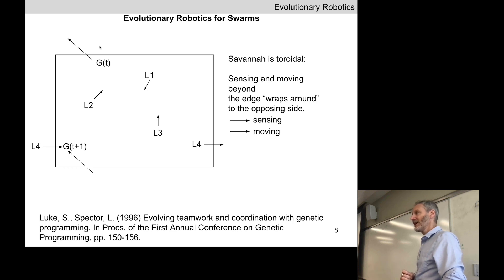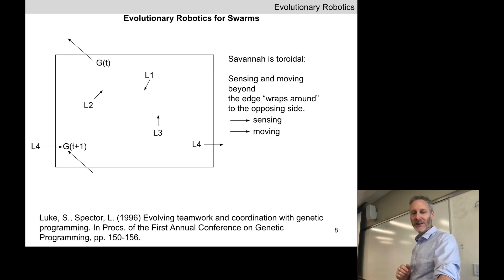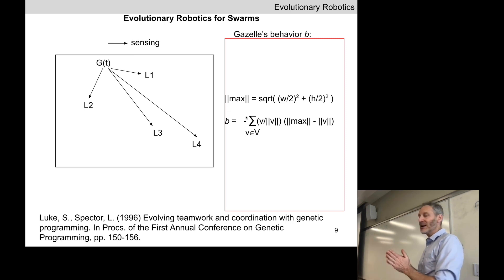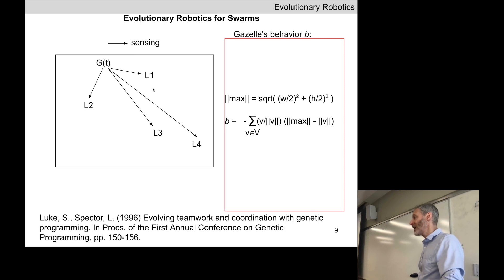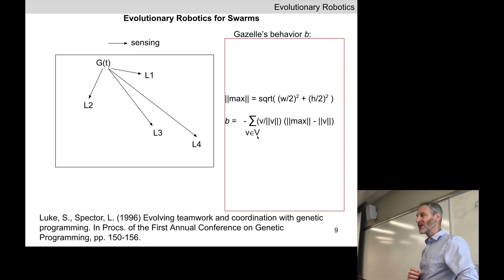We're stacking the deck against the lions — they can't corner the gazelle, and they're slower. We pre-program the gazelle's behavior using vector operations. At every time step, we want back five 2D vectors — one for the gazelle and four for the lions — indicating where each agent wants to move next. To compute the gazelle's behavior, we sum over the set of four vectors that connect the gazelle to each lion, using the shortest distance on the toroid.